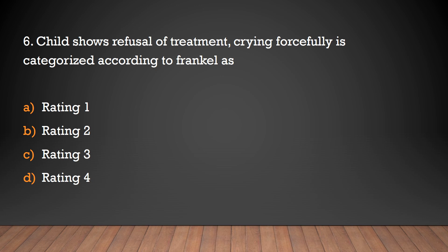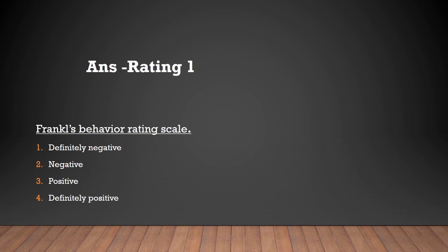A child who refuses treatment, crying forcefully, is categorized according to Frankl as: Rating 1, Rating 2, Rating 3, Rating 4. Answer: Rating 1. According to Frankl's behavior rating scale, Rating 1 is Definitely Negative, Rating 2 Negative, Rating 3 Positive, and Rating 4 is Definitely Positive.